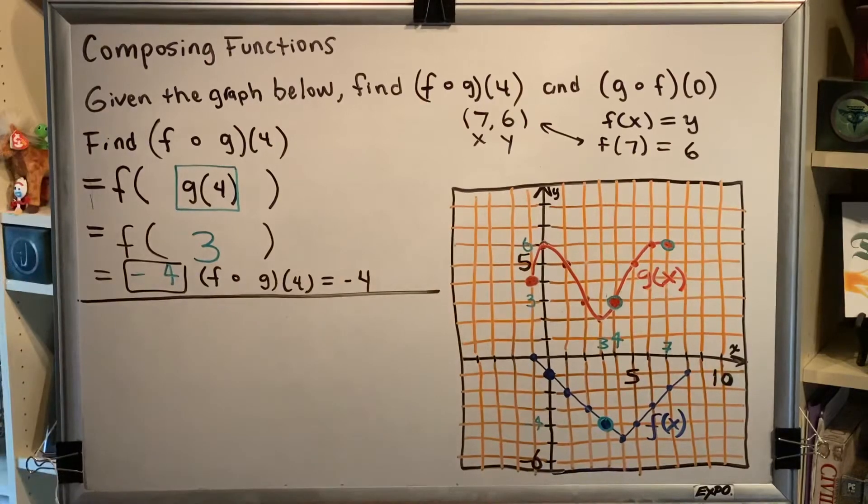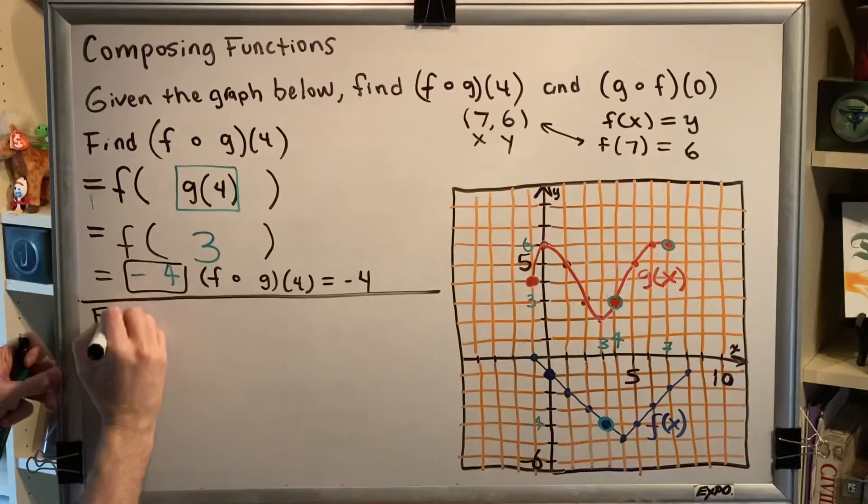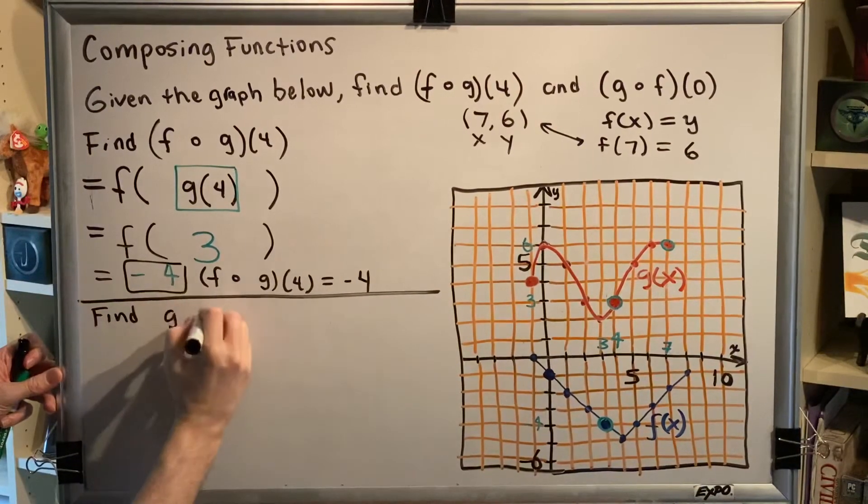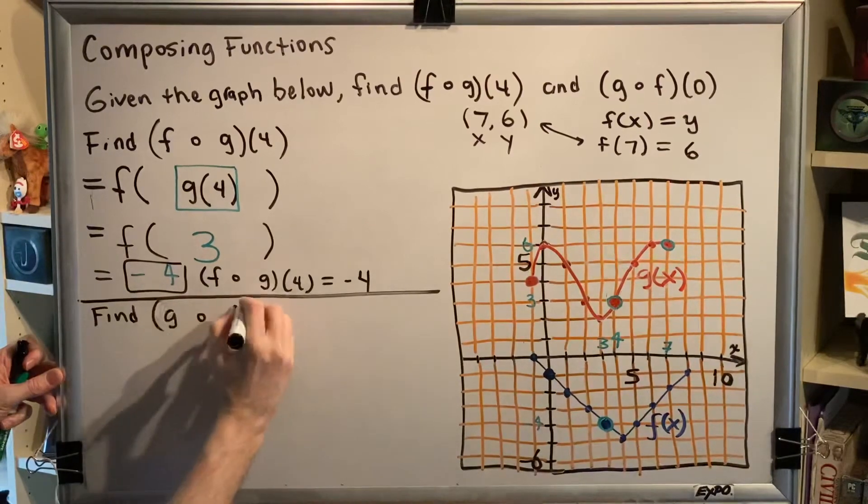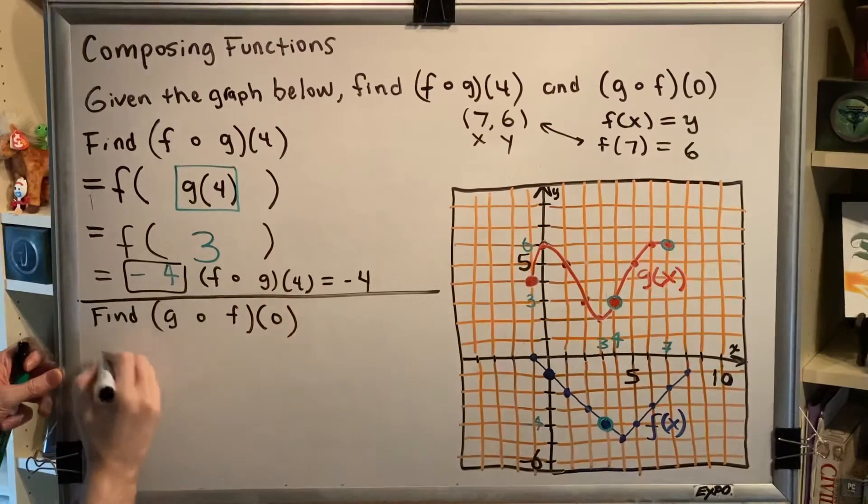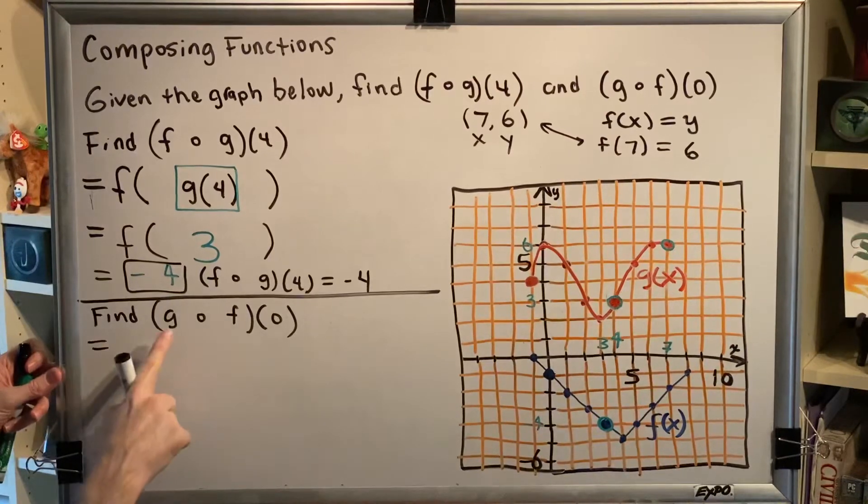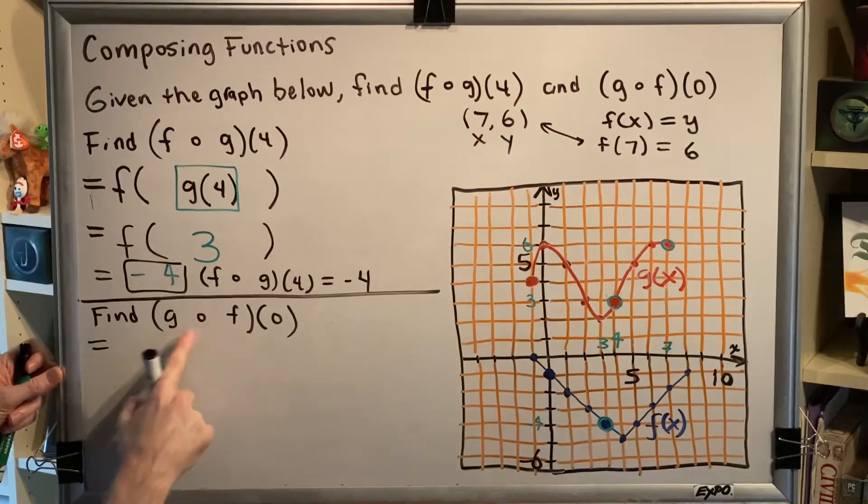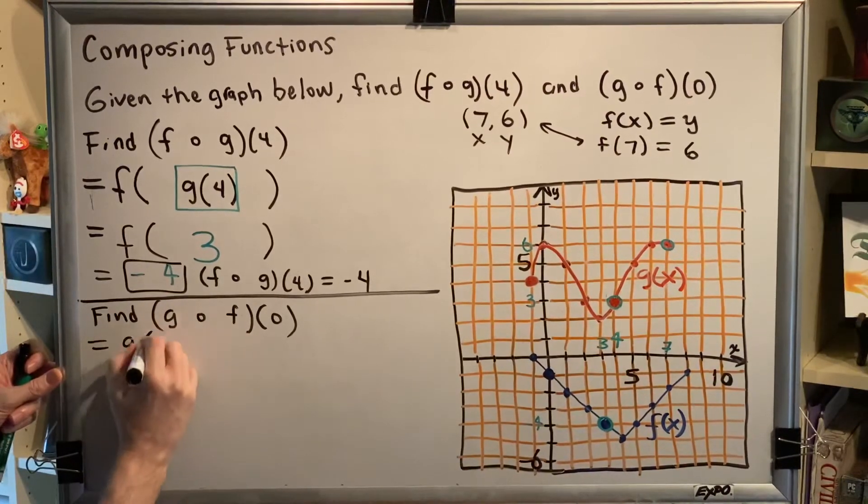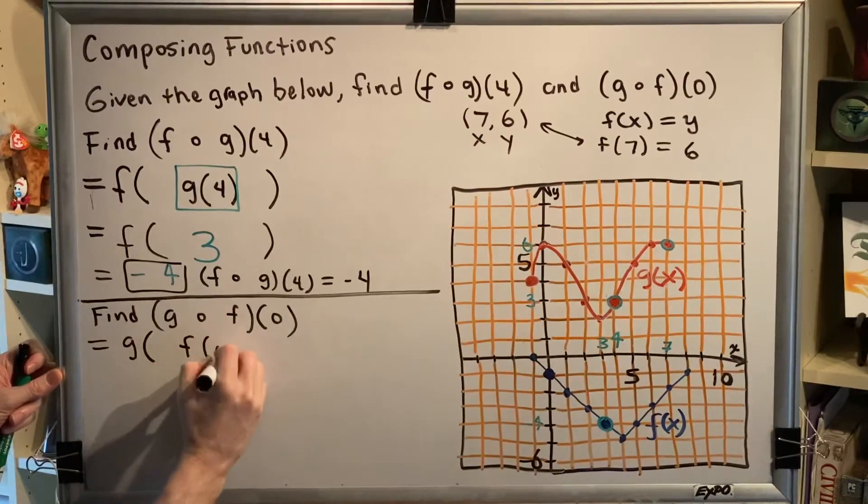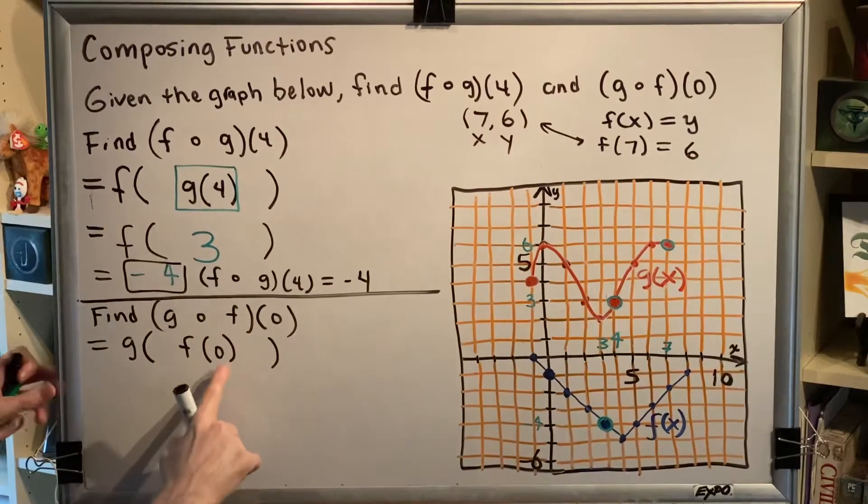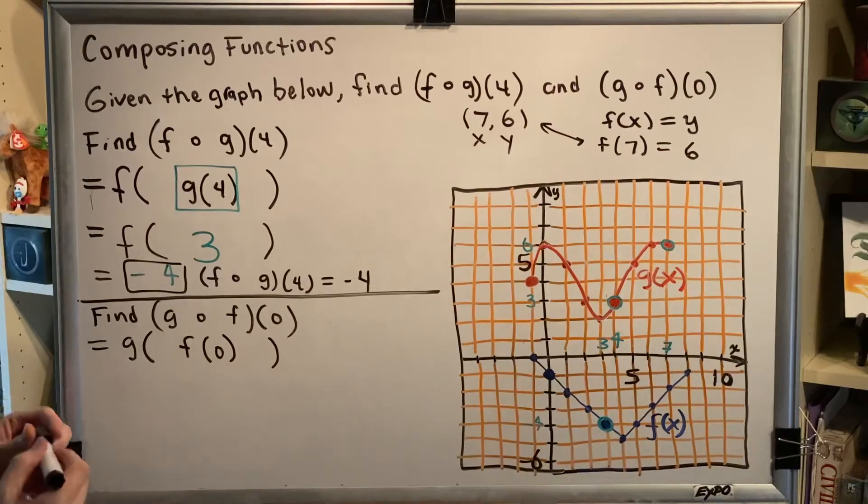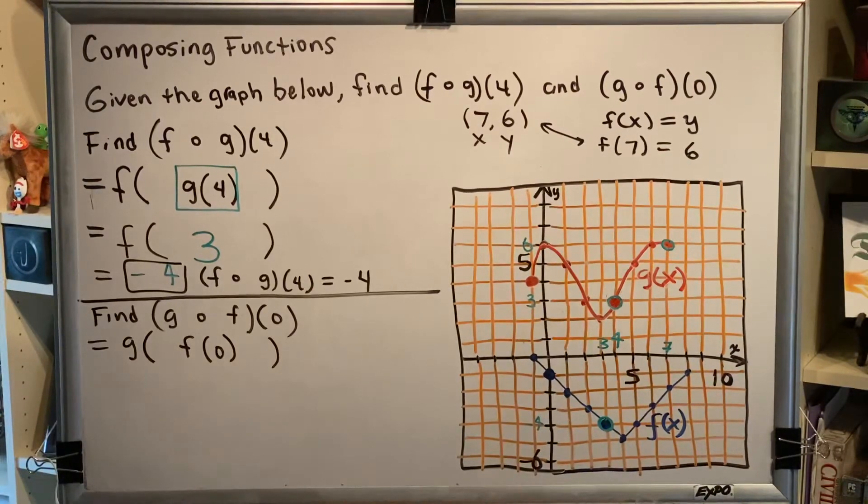Let's do the second part of this problem. Find g composed with f of 0. The first step is to rewrite using the definition and we write the definition in the order of the letters that we see here. So this will be g of f of 0. We notice that there is a number here, so we're going to work from the inside out.